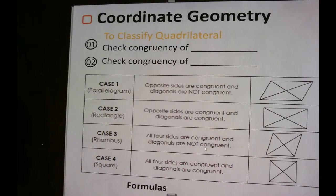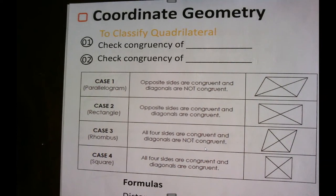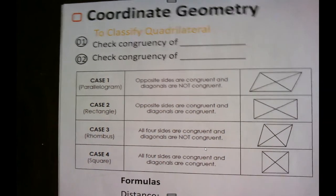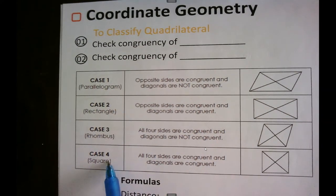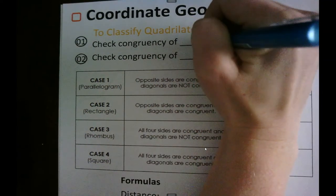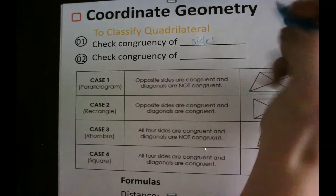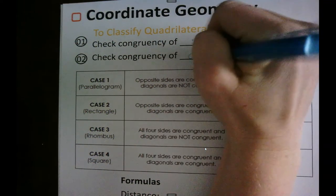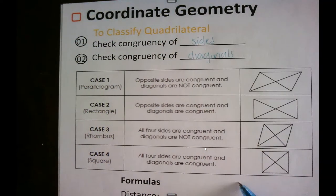Now we're going to look at some of our quadrilaterals on a coordinate plane — what I call coordinate geometry. We are going to be given four points, and we're going to first determine which kind of quadrilateral it is: parallelogram, rectangle, or square. We're going to check the congruency of its sides and then check the congruency of its diagonals, using a cheat sheet to identify which one it is based on those congruencies.